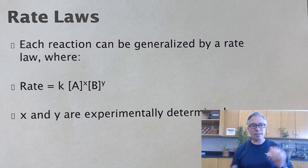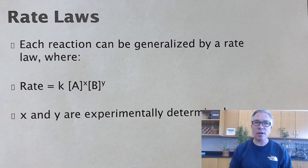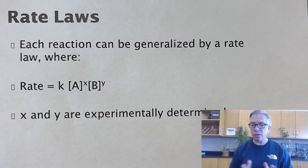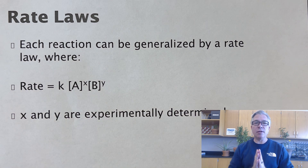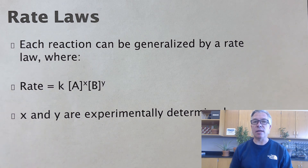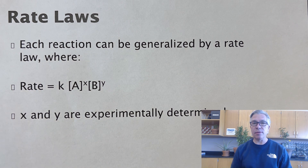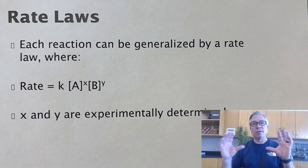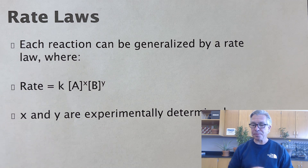Hi, everyone, and welcome to this episode of Crowded Beaker Solves. Today, we are continuing a series on chemical kinetics, and if you watched our first video, we talked about rates of reactions and how we can quantify the rate of reaction, typically in units of moles per liter per second or atmospheres per second — some quantity or concentration versus a unit of time.